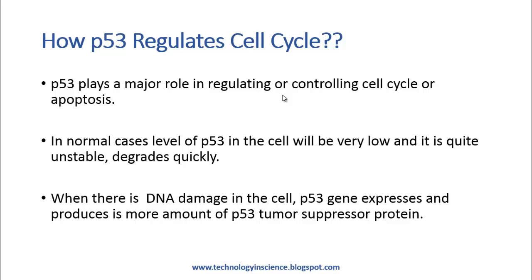P53 plays a major role in regulating cell cycle or apoptosis. In normal healthy cells, the level of P53 will be very low, quite unstable, and degrades quickly. But when there is DNA damage in the cell, there will be a trigger to express P53, and the P53 gene expresses and produces more amount. The gene product is called the P53 tumor suppressor protein.